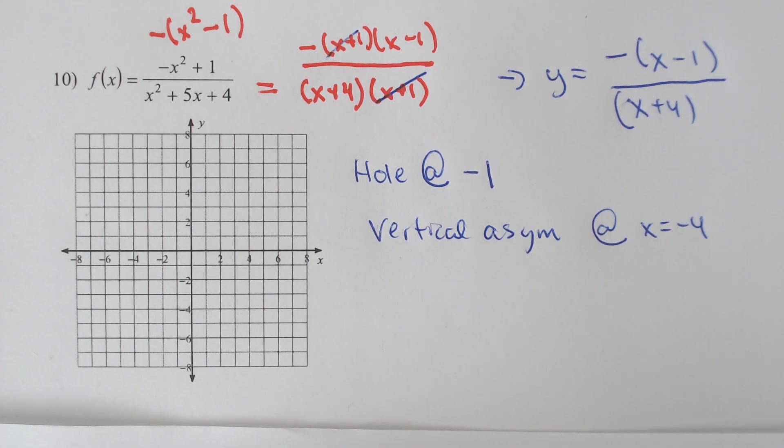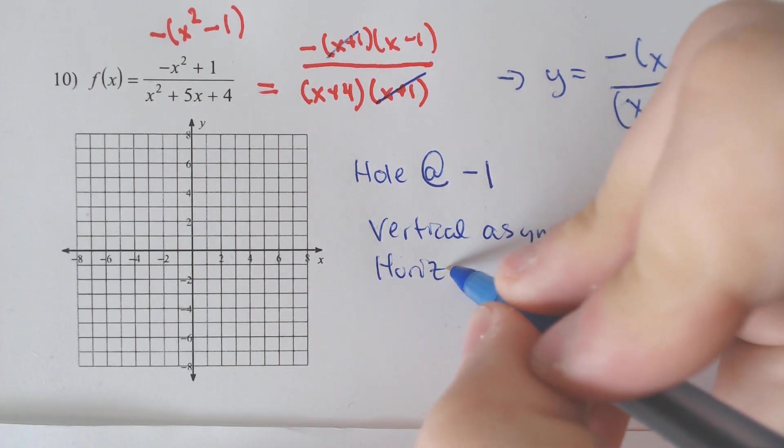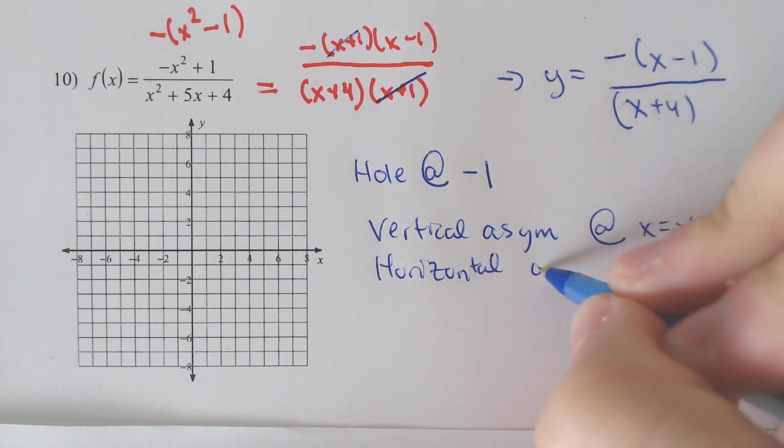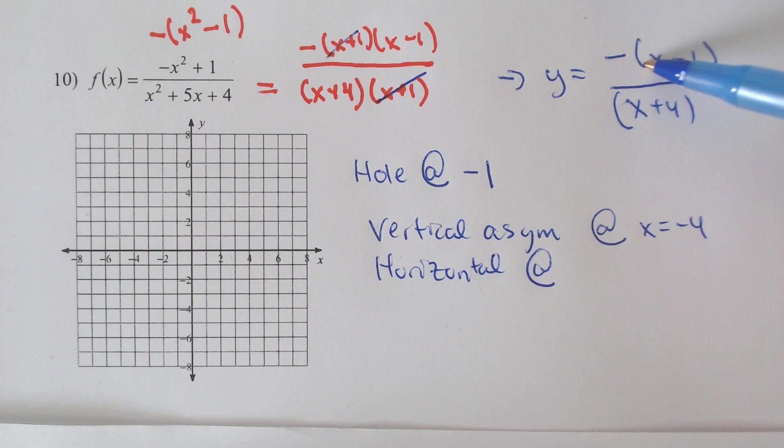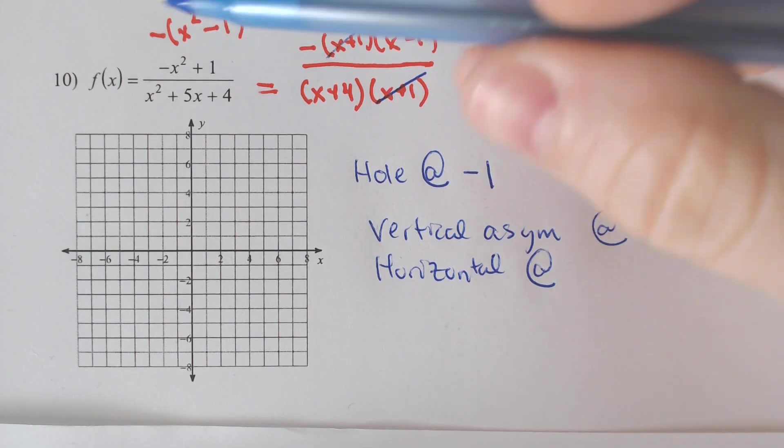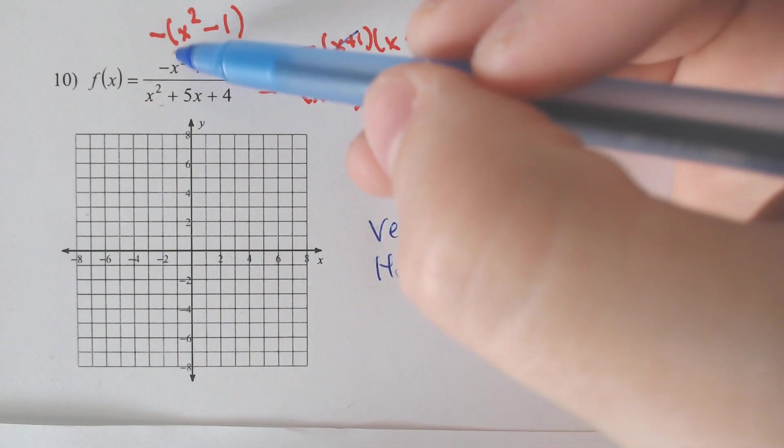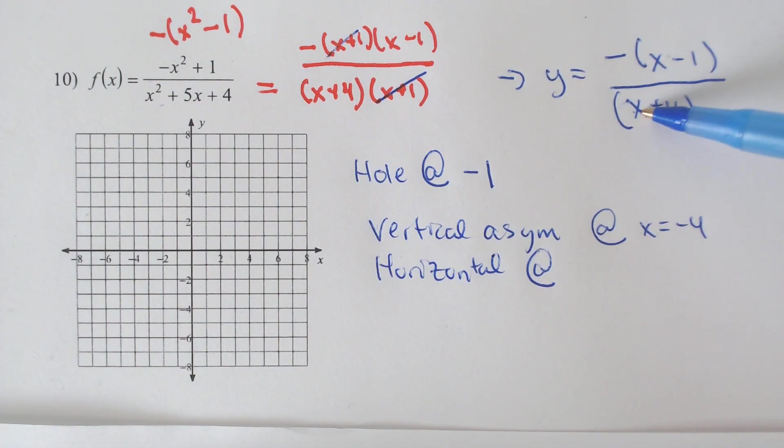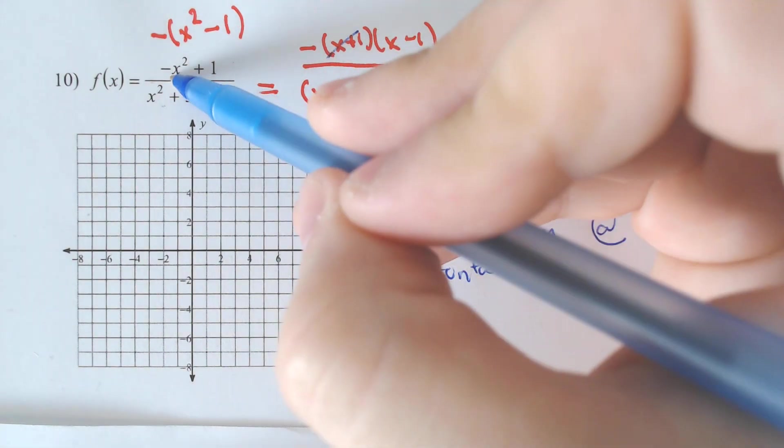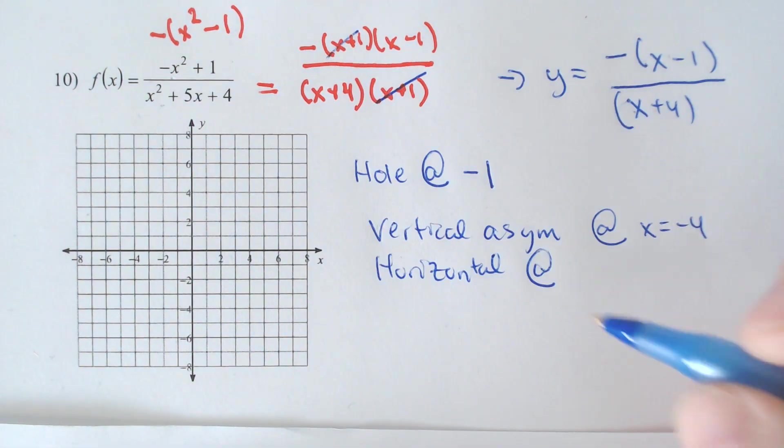And we still have a horizontal asymptote at leading coefficient over leading coefficient, because the beginning as well as this guy have the same exponent. This is x squared and x squared. This is x and x, so it's going to end up being negative 1 over 1.